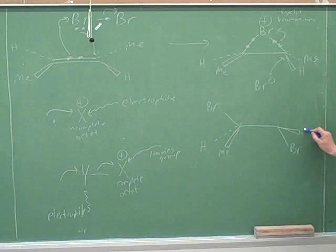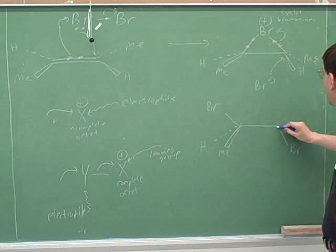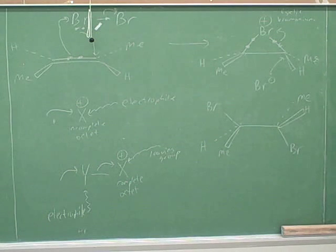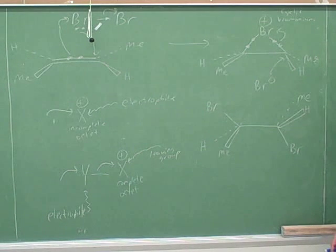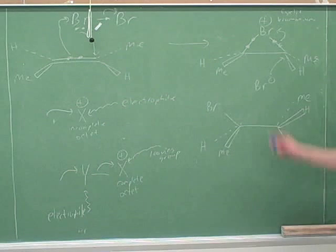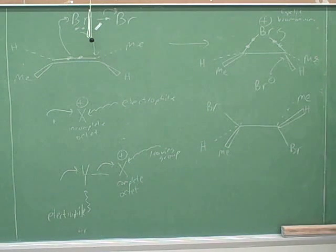There are a couple of geometry points here. This bromine should relax to the left when we break this bond, so we get a normal 109.5 degree bond angle. And the other bromine is coming in from below, so it should push the substituents on its carbon up above.